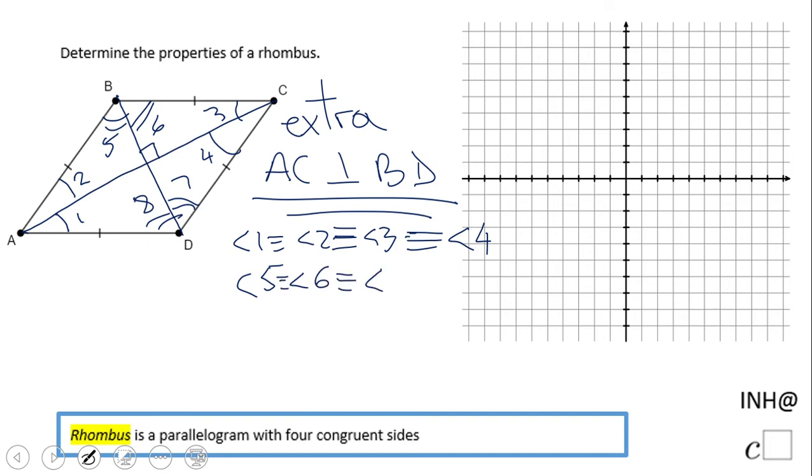And obviously the measure of this angle is the same. These are the extra properties of the rhombus. One more time, don't forget the rhombus is a parallelogram. So we have also the other properties.